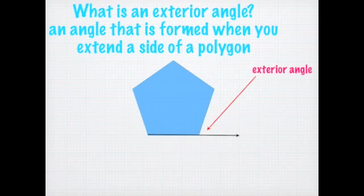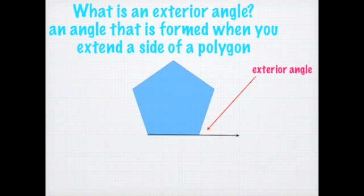On to exterior angles — exterior angles are a little bit easier. What is an exterior angle? It's just an angle formed when you extend a side of a polygon. If you take any side of a polygon and continue that line, the angle it makes with the adjacent side is the exterior angle. You can see this in the picture with the pentagon. Exterior means outside, so it's an angle outside of the polygon.